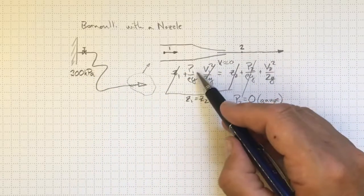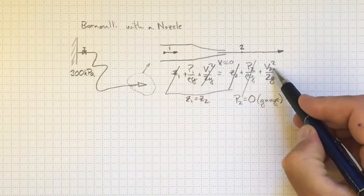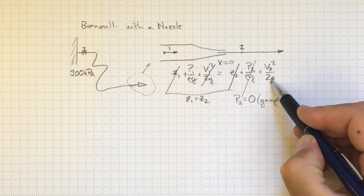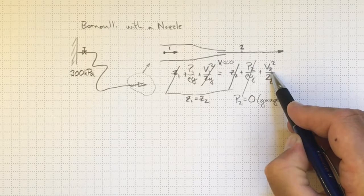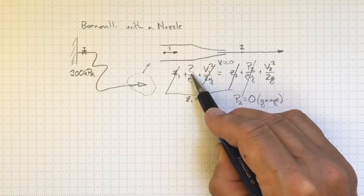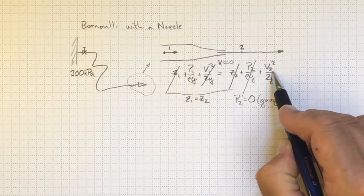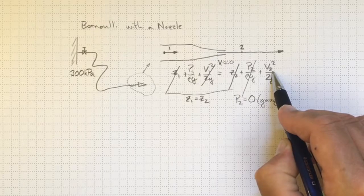So now we've got just p1 over rho g and v2 squared over 2g. The higher the pressure, the higher the velocity squared is going to be as we convert potential energy of pressure into kinetic energy of velocity through this nozzle.